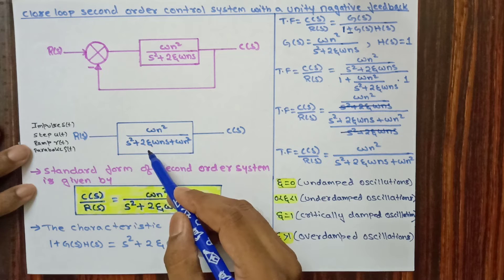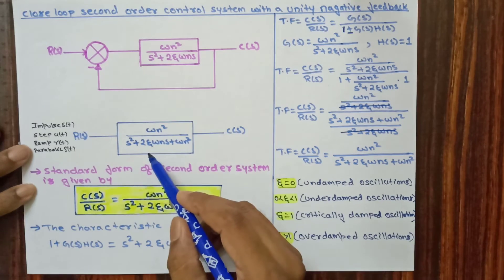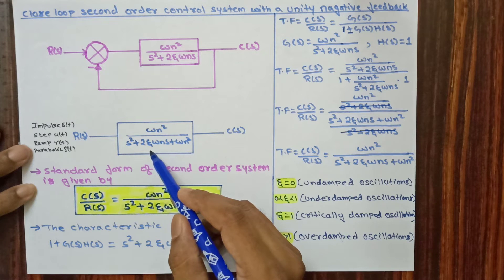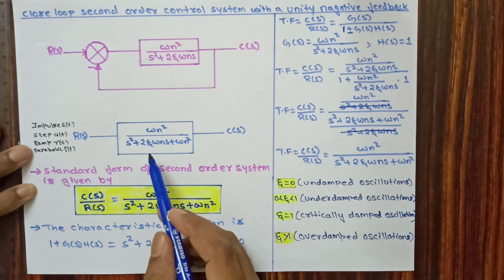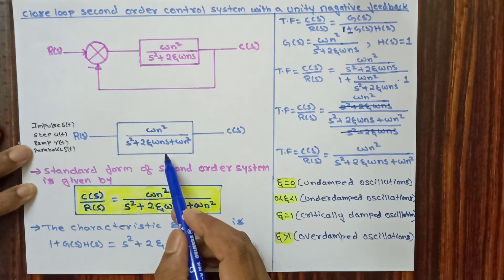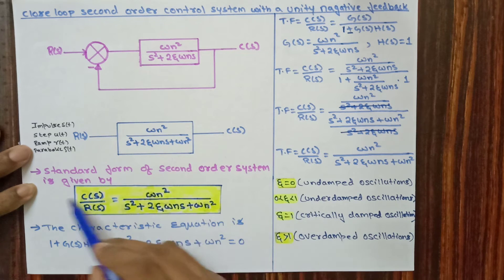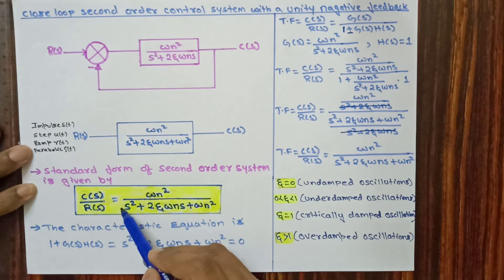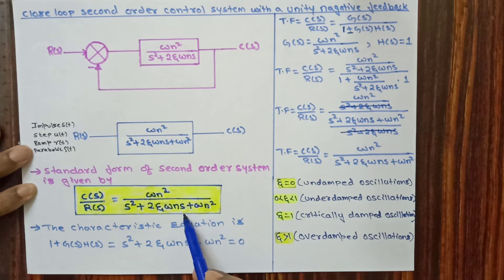These are the effects of zeta on the second order system for step input. By applying input we get a change in output with respect to time, and the output changes for different zeta values. Looking at this closed loop transfer function, the standard form of a second order system is C(s)/R(s) = omega_n squared / (s squared + 2*zeta*omega_n*s + omega_n squared).